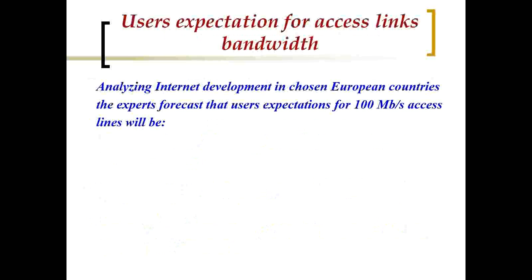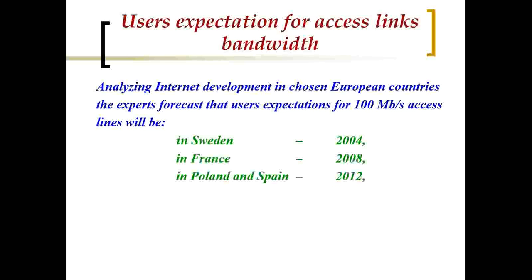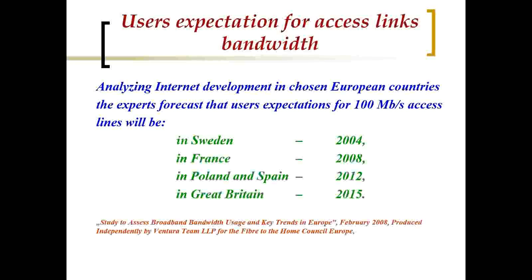Regarding user expectations for access links and bandwidth, when analyzing internet development in chosen European countries, expert forecasts show that user expectations for 100 Mbit per second access were reached in Sweden in 2004, in France in 2008, in Poland and Spain in 2012, and in Great Britain it will be 2015. This study was based on the article 'Study to Assess Broadband Bandwidth Usage and Key Trends in Europe', released in February 2008.